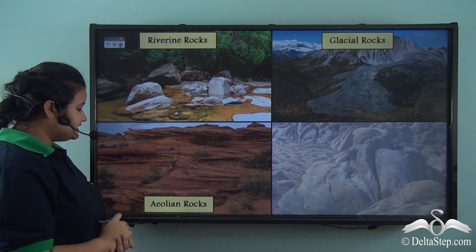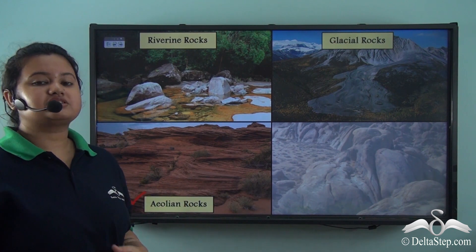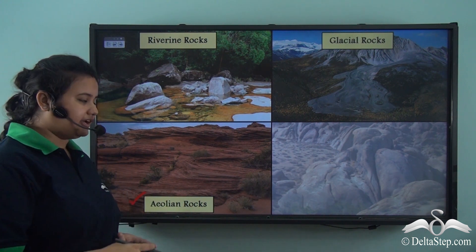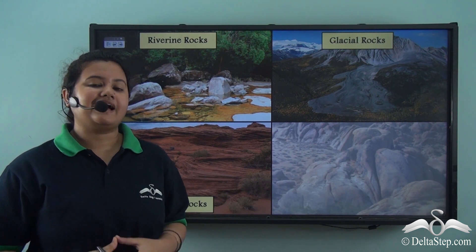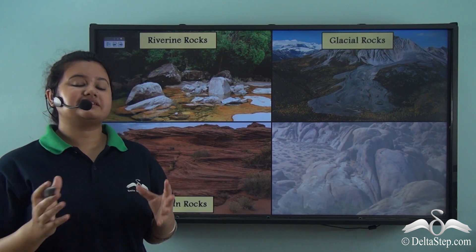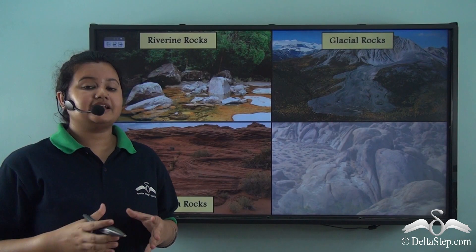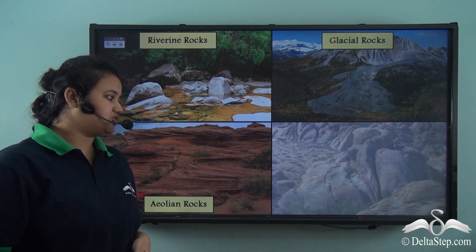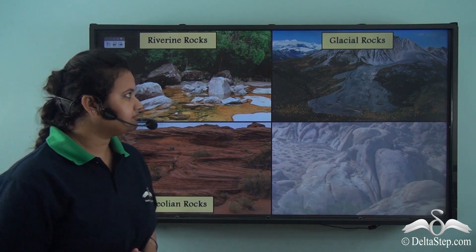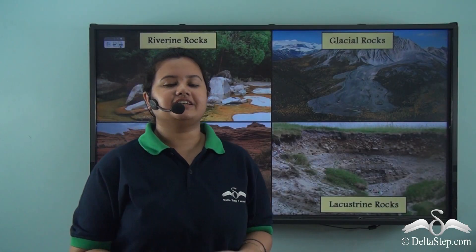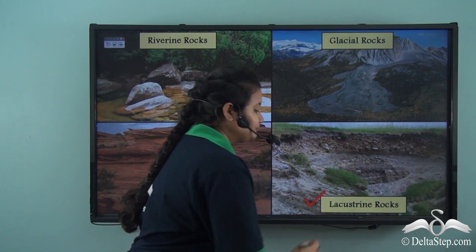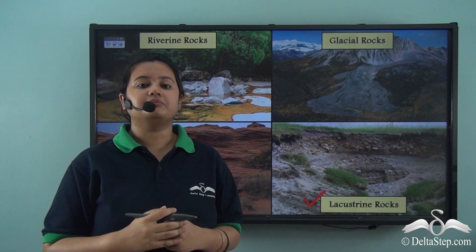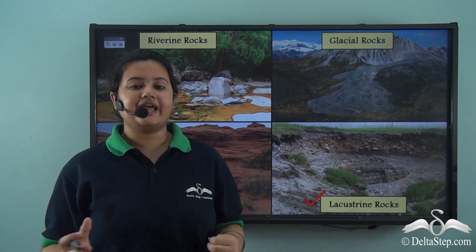The third type of sedimentary rock is aeolian rocks. Aeolian rocks are formed due to erosion and deposition of sand sediments by wind. When wind blows over a land surface, it carries loose sediments like sand particles along with it, and when the flow of wind gets obstructed by an obstacle, it deposits the sediments — this leads to the formation of aeolian rocks. Another category is lacustrine rocks, which are generally found at the bottom of a lake and are formed due to deposition of sediments of pre-existing lakes.